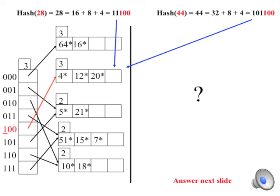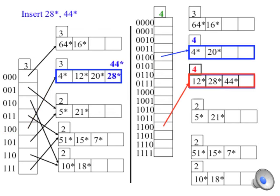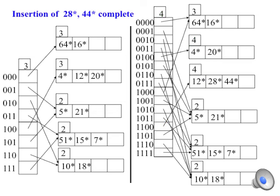Pause in order to draw the two bins that result from the split, and otherwise complete the insertions. The figure on the right shows the two bins resulting from the split. And this shows the final result after inserting 28 and 44 with all pointers updated.